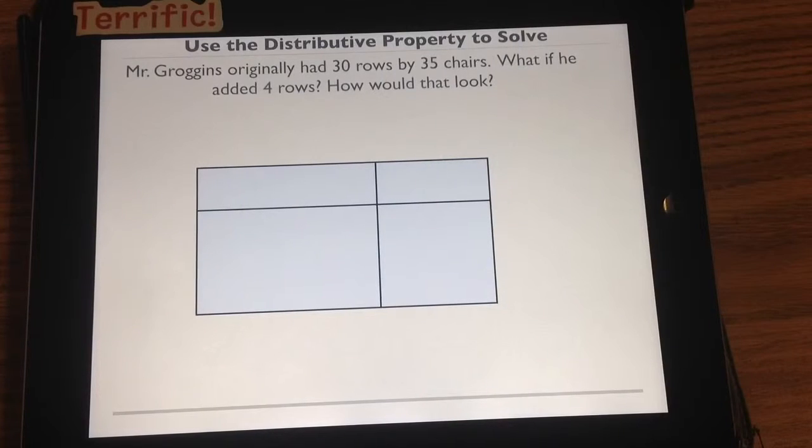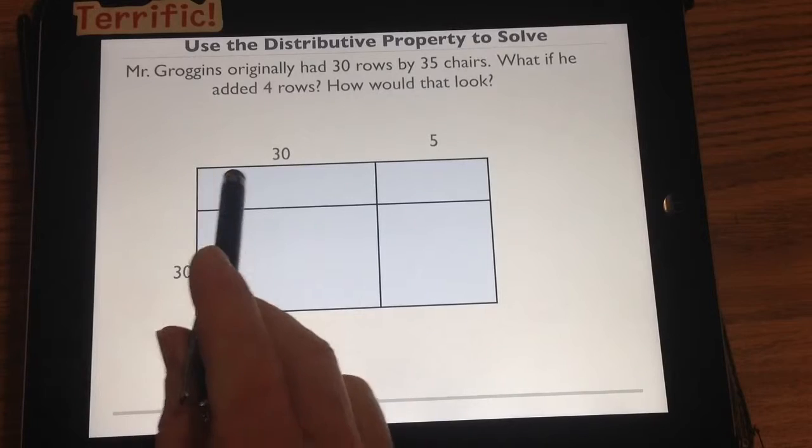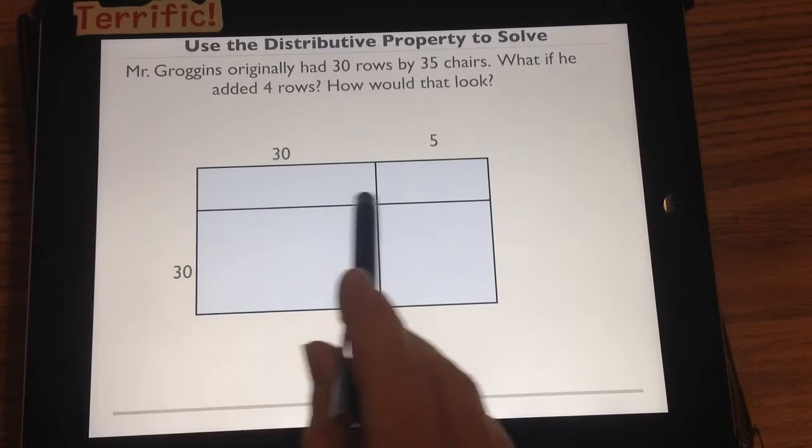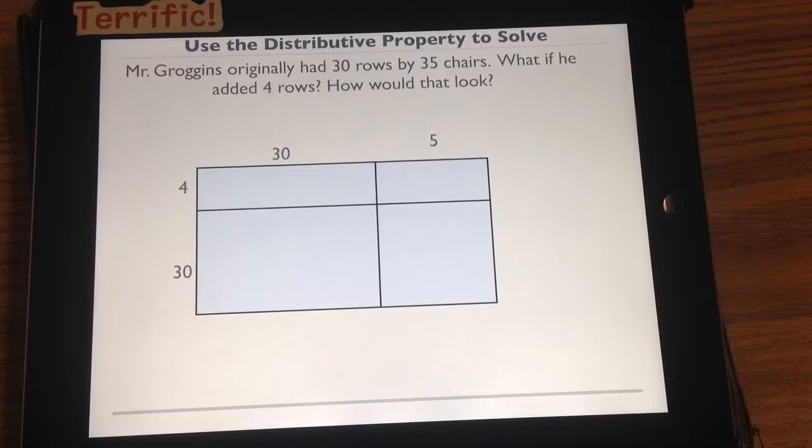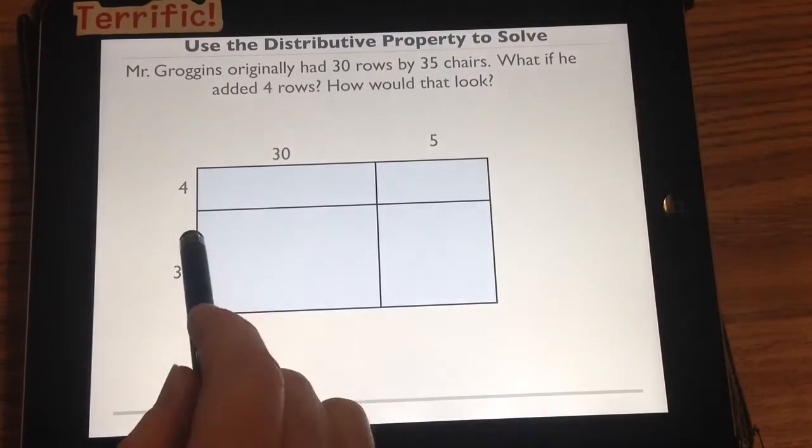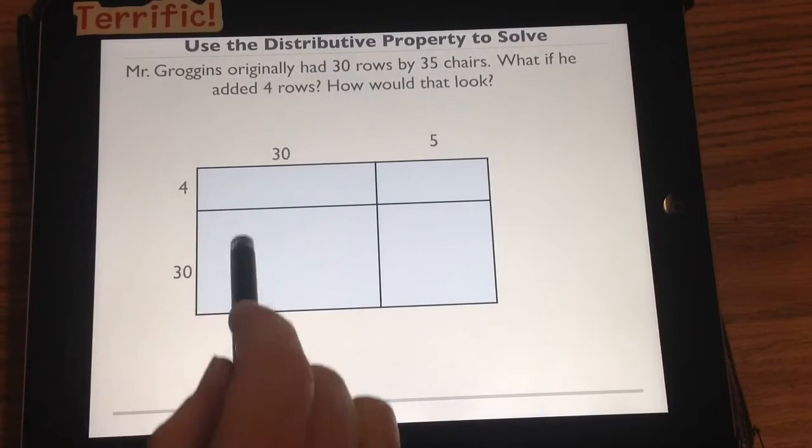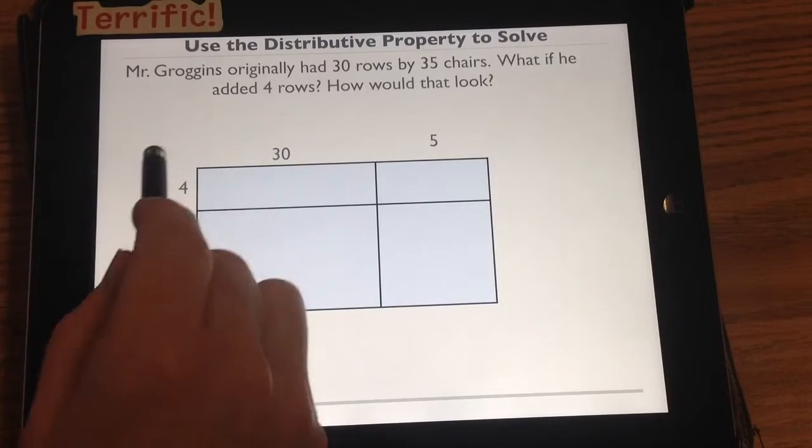Did it look like that? Well, if it didn't, that's okay. We're going to put up our original 30 rows by 35 chairs. This top row, or this top part of our area model, is going to be the additional 4 rows. So this is no different. It's just a distributive property. We've broken down the 35, and now we've broken down the 30 plus 4, which is 34.